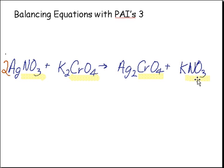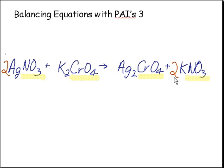To get two nitrates on this side, we would need to put a big two right in front of the K. Two NO3s, two NO3s. You'll notice now that we have two Ks on the right and two Ks on the left. Our equation is now balanced.